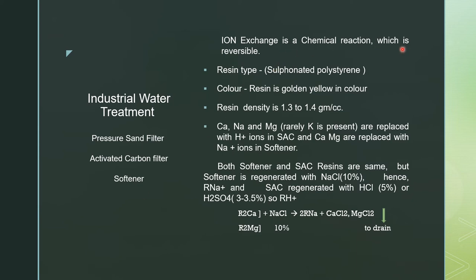Ion exchange is a reversible chemical reaction. The resin type is sulfonate polystyrene. If free residual chlorine is not filtered by the ACF, it will break the polymer chain leading to fines formation. Fines are removed during regeneration, reducing resin volume. The color of the softener or strong acid cation resin is golden yellow, and the resin density is 1.3 to 1.4 g/cc.